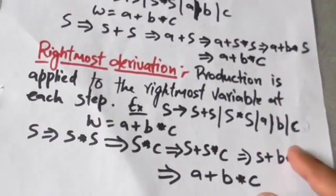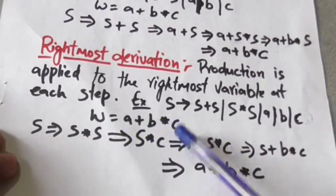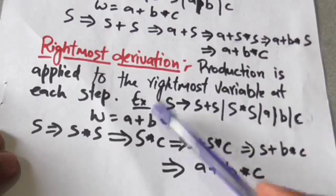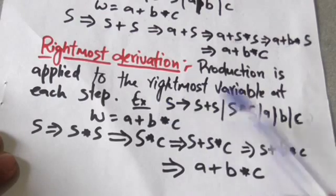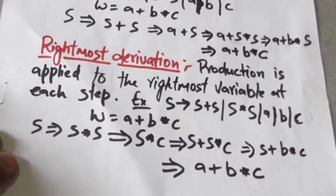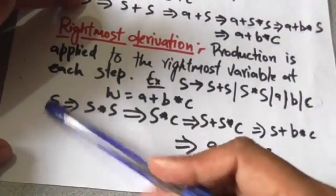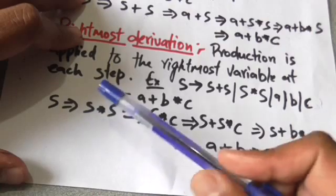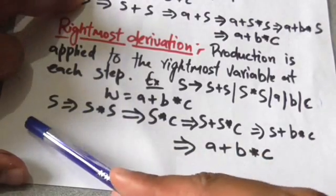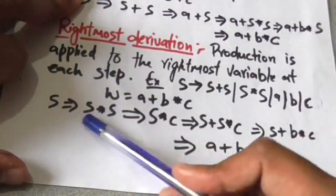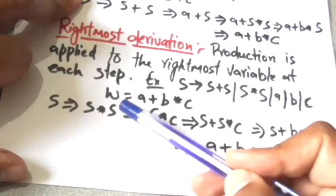Now let us find the rightmost derivation of the same string W which equals a plus b into c, using the same production rules: S derives S plus S, S derives S into S, S derives a, S derives b, S derives c. Starting from S, I have applied the production rule S derives S into S, so S is replaced by S into S. Now I have two options: apply the production rule to the first S or the second S.